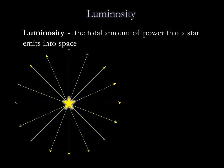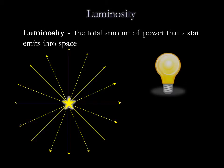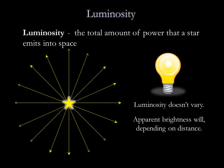We define apparent brightness as the amount of power reaching us per unit area, or per square meter. Luminosity is the total amount of power that a star emits into space. When we talk about how bright stars are in an absolute sense, regardless of their distance, we're talking about luminosity. For example, a 100 watt light bulb always puts out the same amount of light — its luminosity doesn't vary — but its apparent brightness will depend on how far away you are from the bulb.